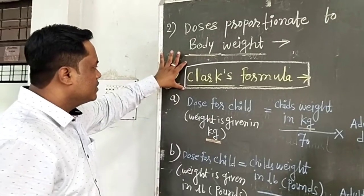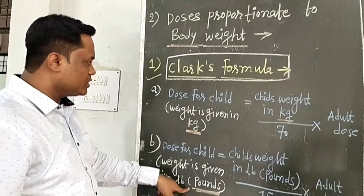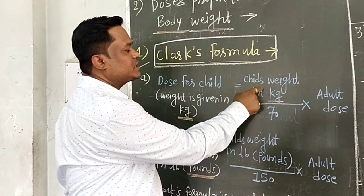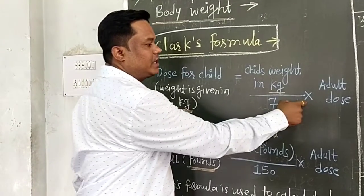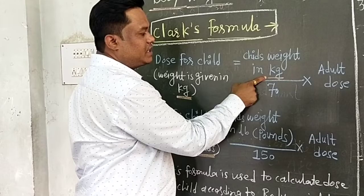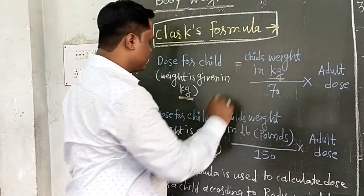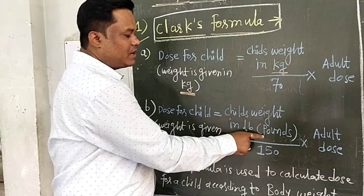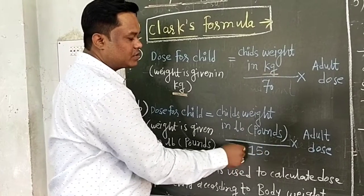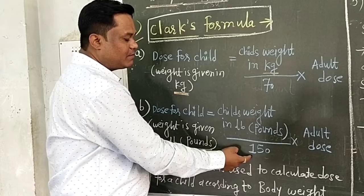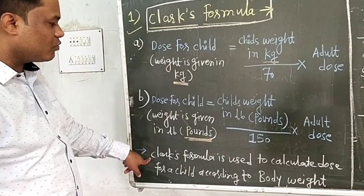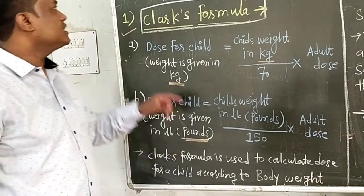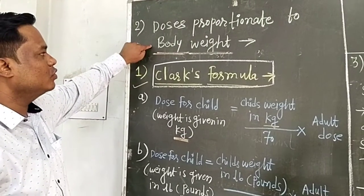Clark's formula is applied when the weight is given in kg — divided by 70 — or when the weight is given in pounds — divided by 150. This formula is used to calculate the dose for a child according to body weight.